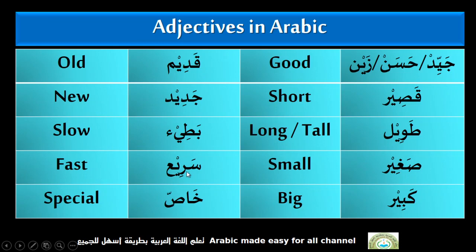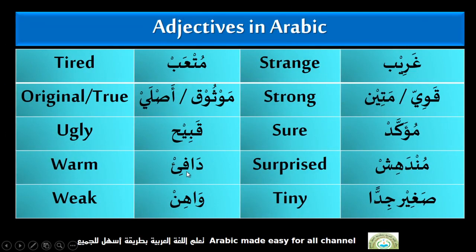Khas — Special. Gharim — Strange. Kawi, Matin — Strong. Muakkad — Sure. Mundahish — Surprised. Soreer Jiddan — Very Tiny. Mut'ab — Tired. Mawsook, Asliyun — Original, True. Kabir — Ugly. Daafid — Warm. Wahim — Weak.